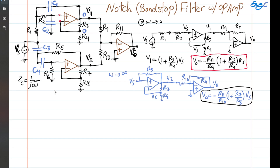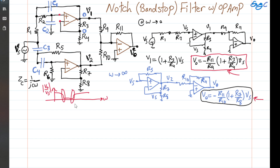The frequency response looks like this: Vout as a function of Vs plotted versus ω. At DC there is a gain defined by the low-frequency equation. At super high frequency there is another gain defined by the high-frequency equation. There is a threshold in terms of ω values — ω1 and ω2 — below which we have the DC gain and above which we have the high-frequency gain. In between, we have the band-stop or notch behavior that this circuit realizes.